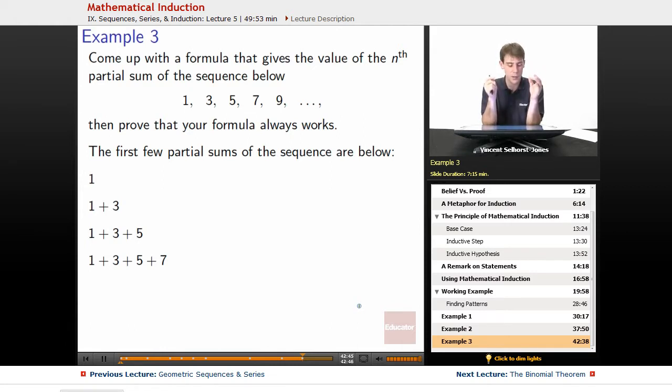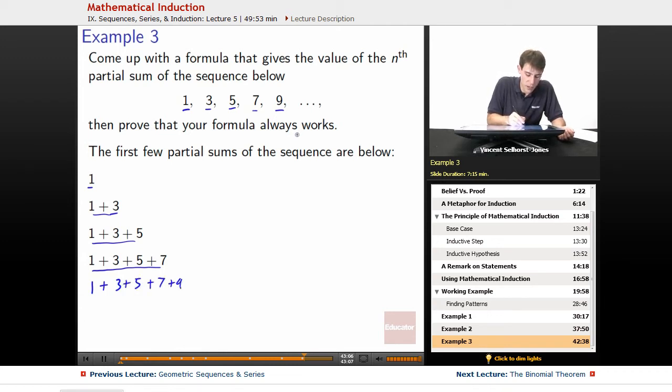The first few partial sums of the sequence are below. Our first partial sum would be just adding 1 together, so that's 1. Our next partial sum would be adding 3 onto what we had before, so that'd be 1 plus 3. The next thing would be 5, so 1 plus 3 plus 5. Next thing would be 1 plus 3 plus 5 plus 7. Next thing would be 9, let's write that out as well: 1 plus 3 plus 5 plus 7 plus 9.